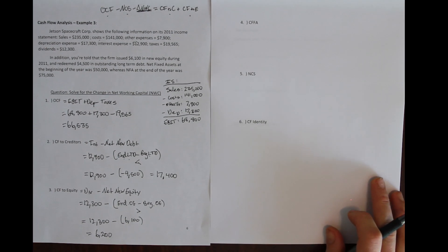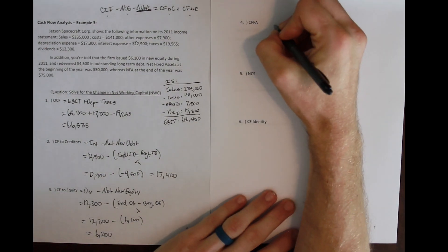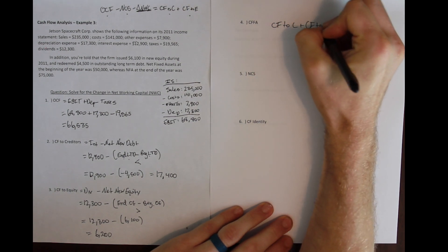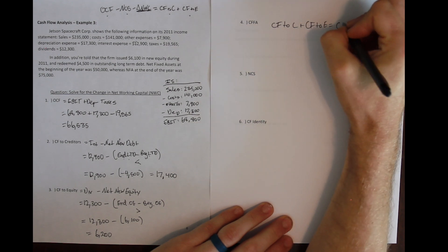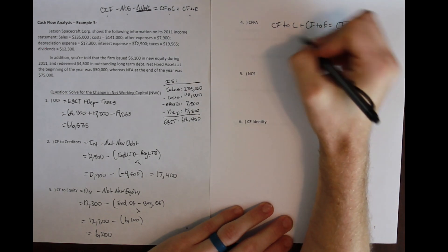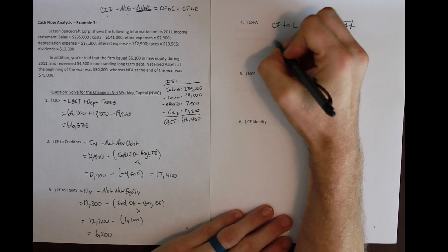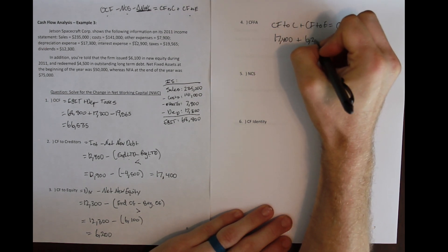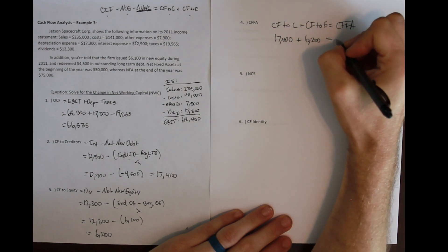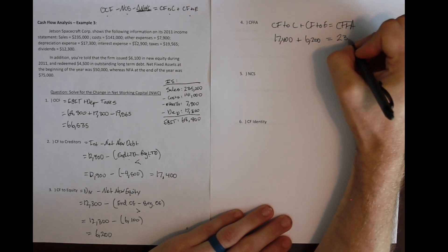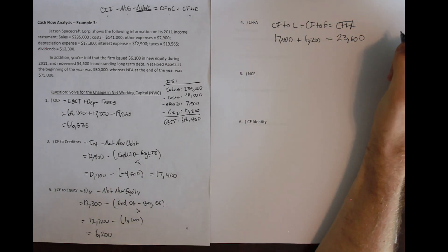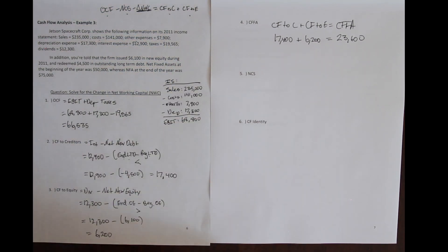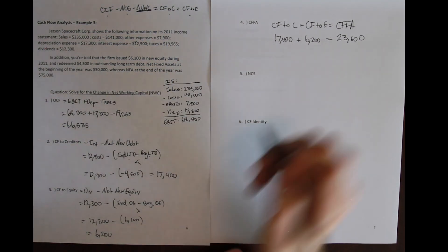From the investor's perspective, cash flow from assets equals cash flow to creditors plus cash flow to equity. Cash flow to creditors is $17,400 and cash flow to equity is $6,200, giving us cash flow from assets of $23,600.